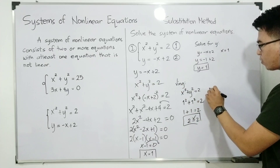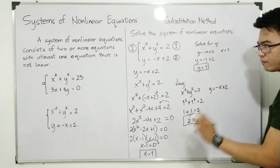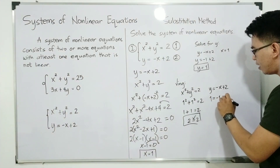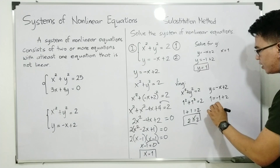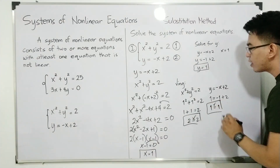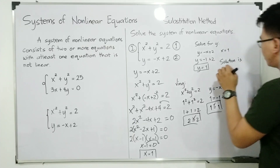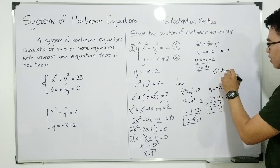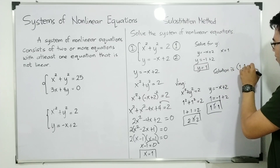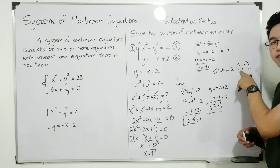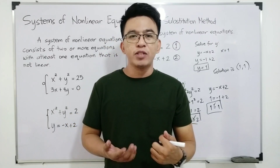Let's move on to the second equation: y is equal to negative x plus 2. We replace the values: 1 is equal to negative 1 plus 2. Simplifying, 1 is equal to 1. Both sides of the equation are equal. Therefore, the solution is the ordered pair (1, 1), in which the value of x is 1 and the value of y is 1. I hope you understood the first example on how to solve systems of non-linear equations.